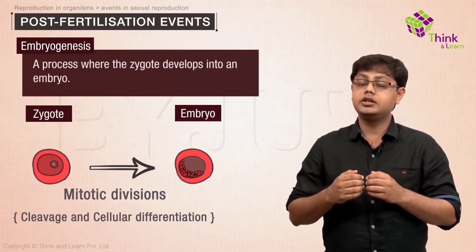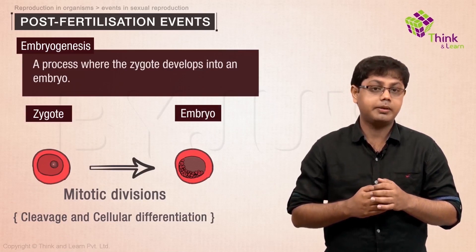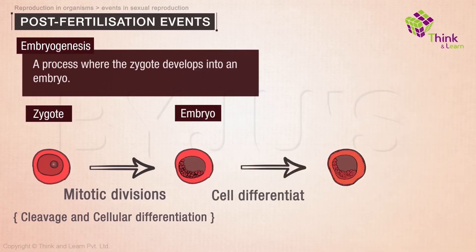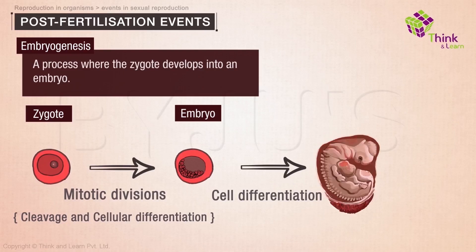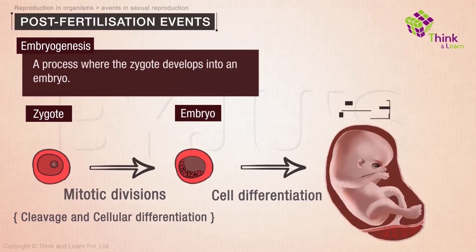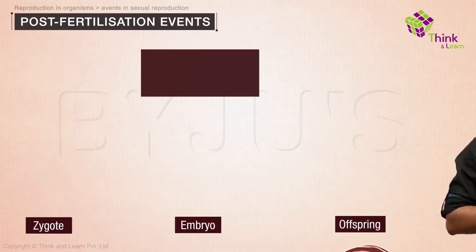While cell division increases the number of cells in the developing embryo, cell differentiation helps groups of cells undergo certain modifications to form specialized tissues and organs. Finally, the embryo develops into the offspring.